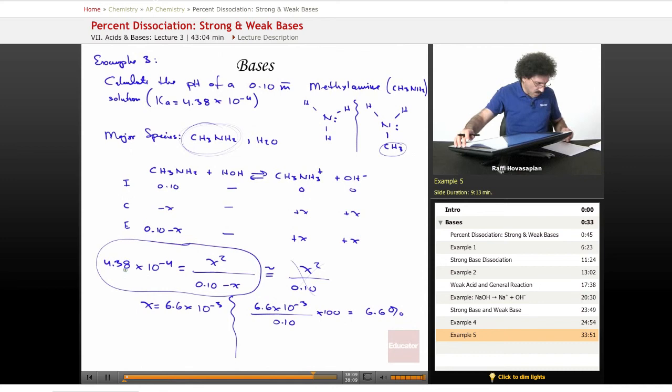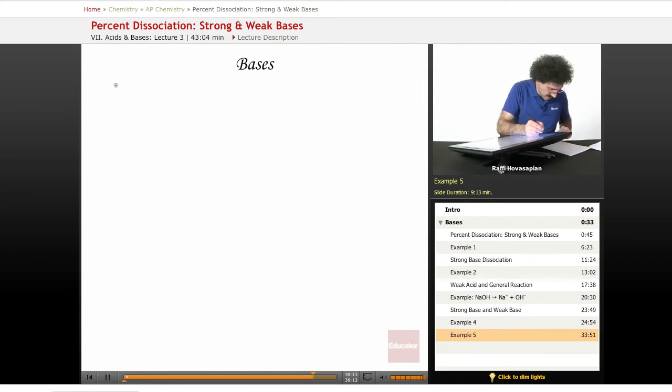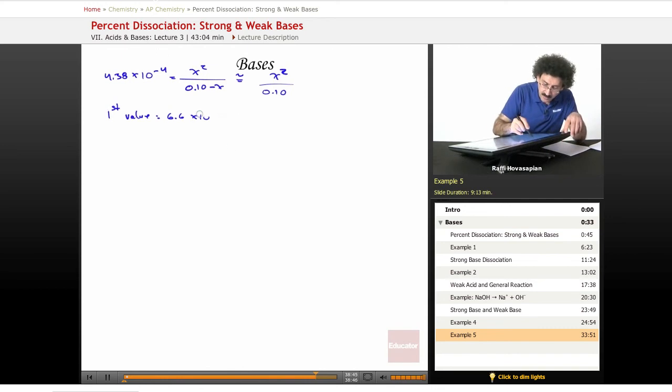Now let's go back, and we said that we have 6.6 times 10 to the negative 3. When we did this approximation of 4.38 times 10 to the negative 4 equals x squared over 0.10 minus x approximately equal to x squared over 0.10, we got a value, our first value, 6.6 times 10 to the negative 3 for x. We checked this, 6.6 times 10 to the negative 3, we divided by the 0.10, and we got 6.6%. That's too high.